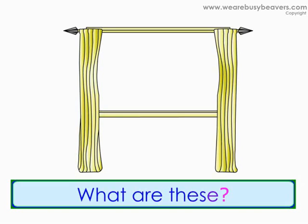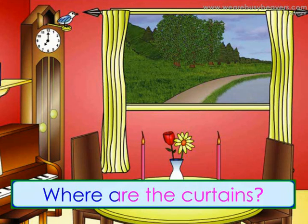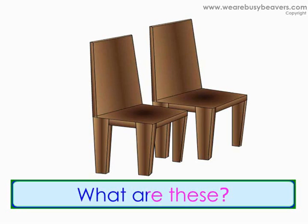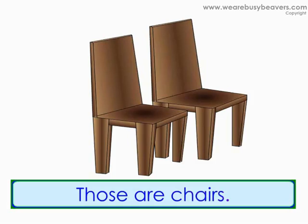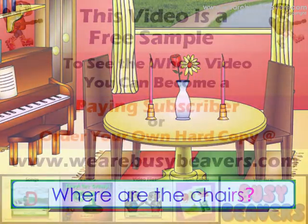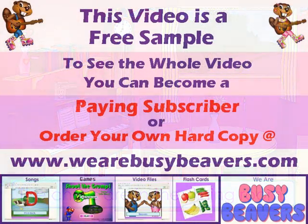What are these? Those are curtains. Where are the curtains? The curtains are in the dining room. What are these? Those are chairs. Where are the chairs? The chairs are in the dining room.